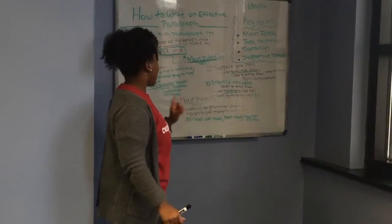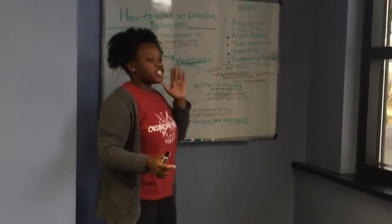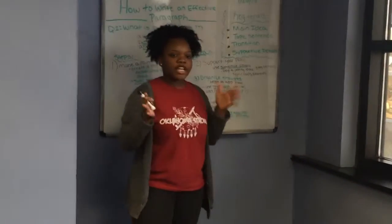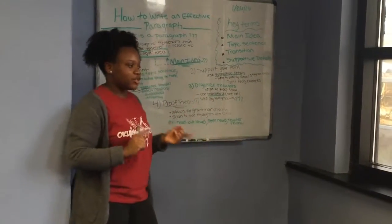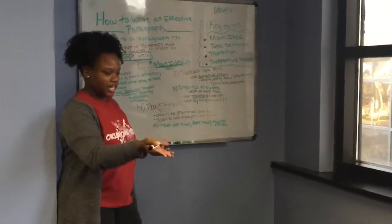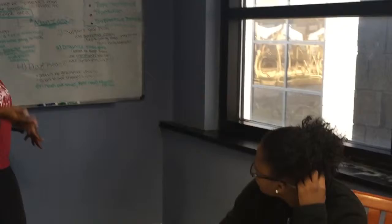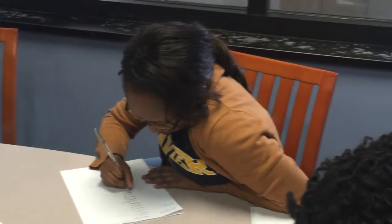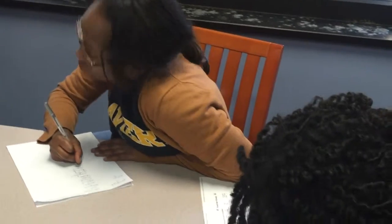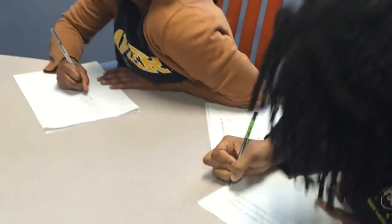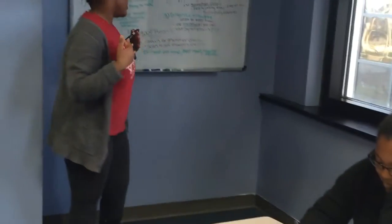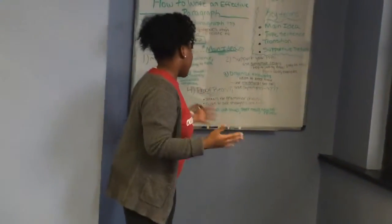Step number one: we make a point. By making your point, you need to have a topic sentence at the beginning of your paragraph, and it talks about your main idea. When writing a topic sentence, you need to have a hook — something that makes you think, 'I need to read this,' something that catches your eye and makes it interesting to write. Remember that while you write it.